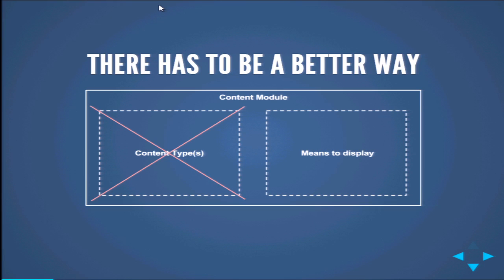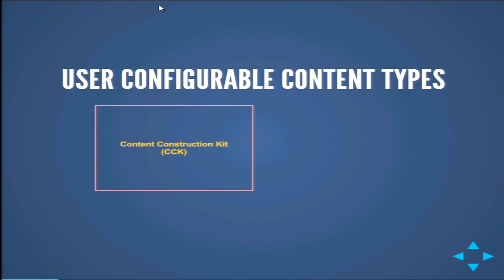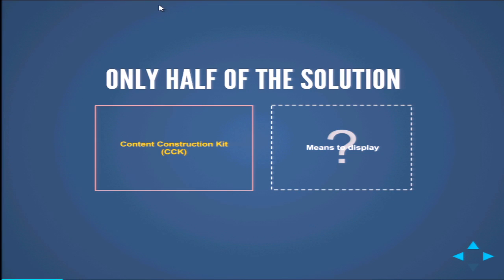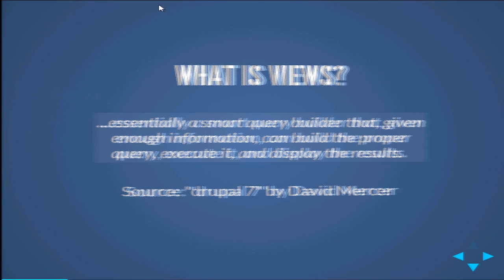So there's got to be a better way, and there is. We created user-configurable content types, originally provided by a module called the Content Construction Kit, or CCK. This was awesome because we could go say, I need this kind of content type — go right to this page, plug in the details, you're good. The problem is that it was only half of the solution: it provided your content types, but no means to display. That's where we get to Views.